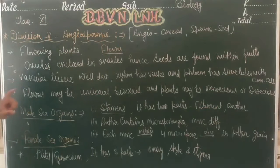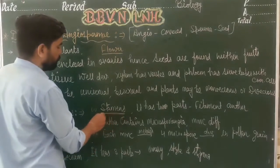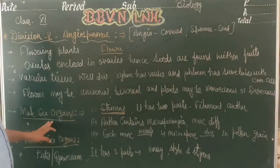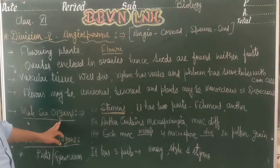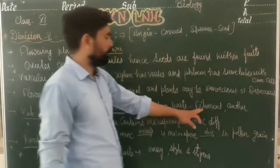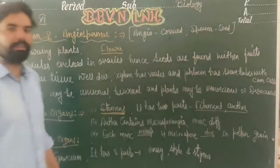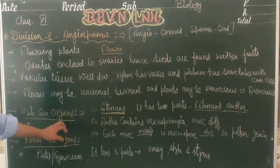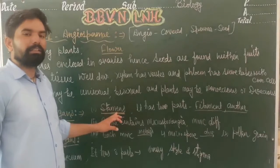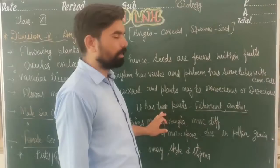Now talking about sex organs — male and female. Male sex organs in plants, which you have also studied in 10th grade, are known as stamens. The stamen is the male reproductive part and it has two parts: filament and anther.